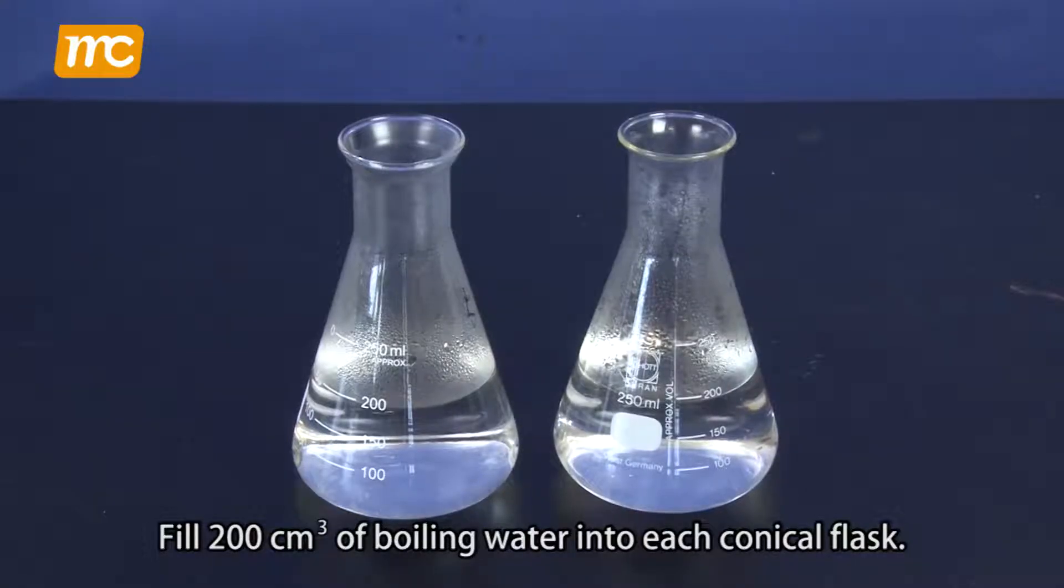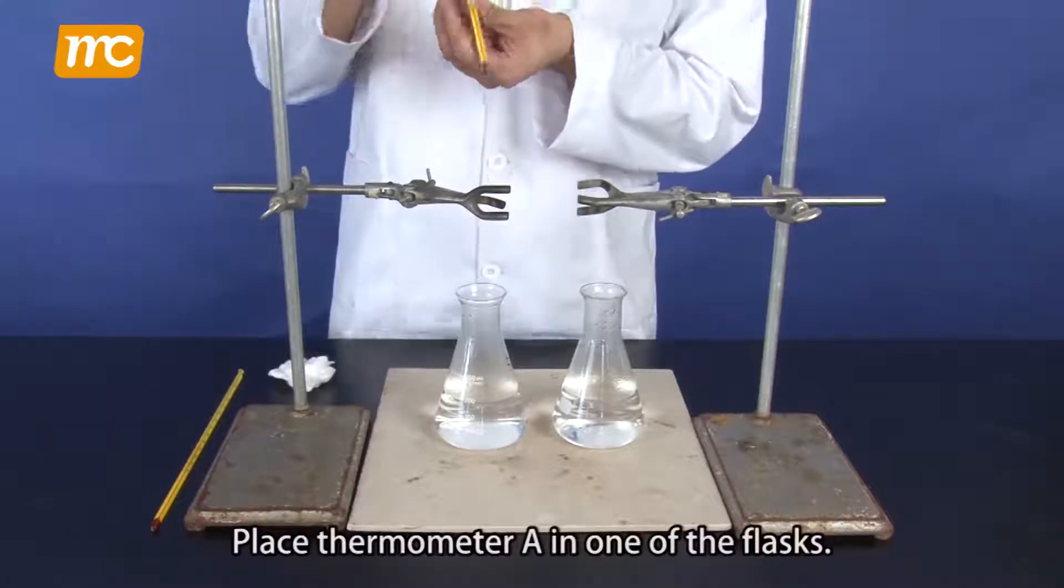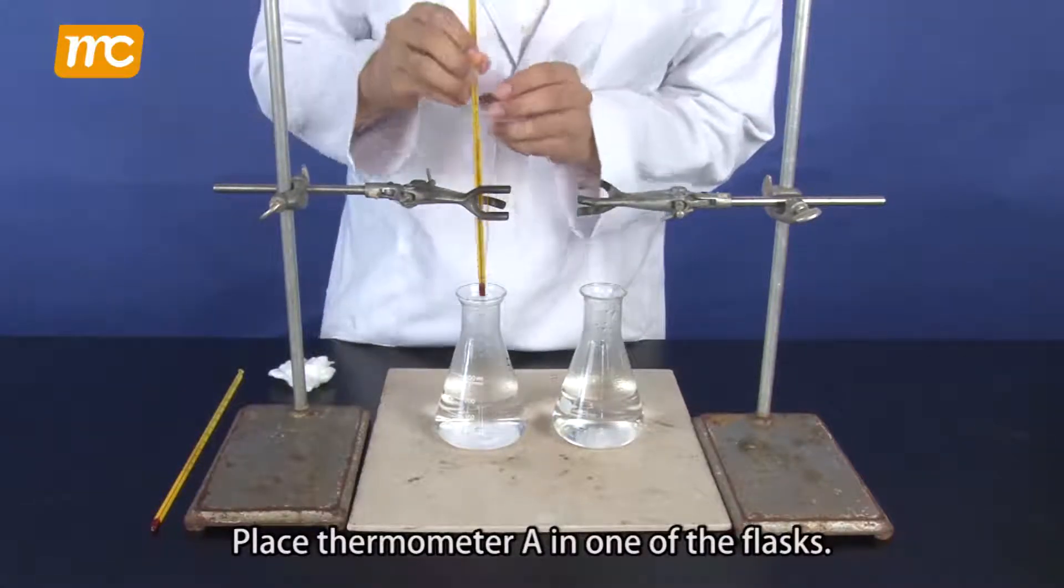Fill 200 cm3 of boiling water into each conical flask. Place thermometer A in one of the flasks.